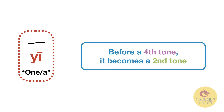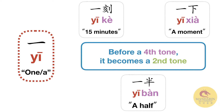一 actually becomes a second tone when it precedes a fourth tone. So for example, this is what you'll see if you look it up in Pleco — 一刻 (yīkè) is what you'll see, but actually in reality Chinese people pronounce it yíkè. Or for example, 一下 (yīxia) is actually in reality pronounced yíxia. And 一般 (yīban) is pronounced yíban.